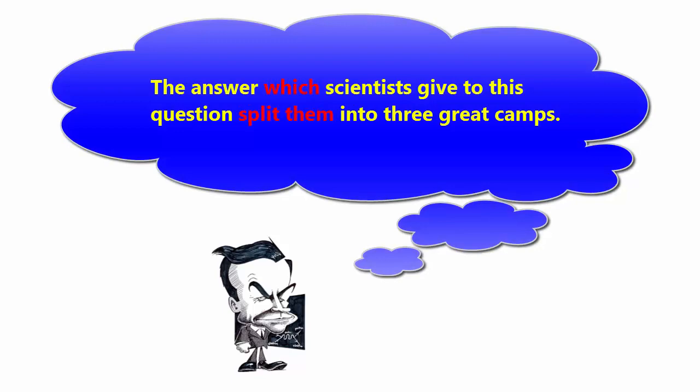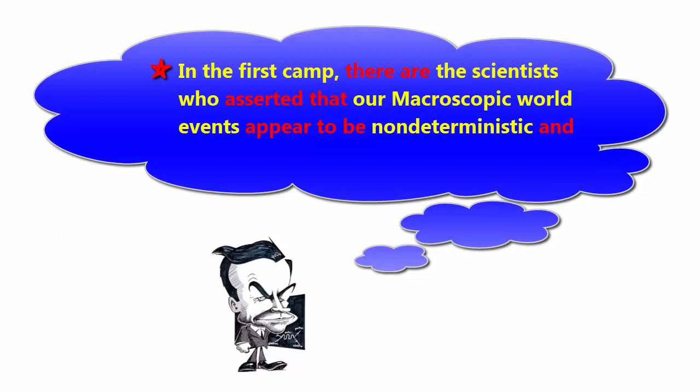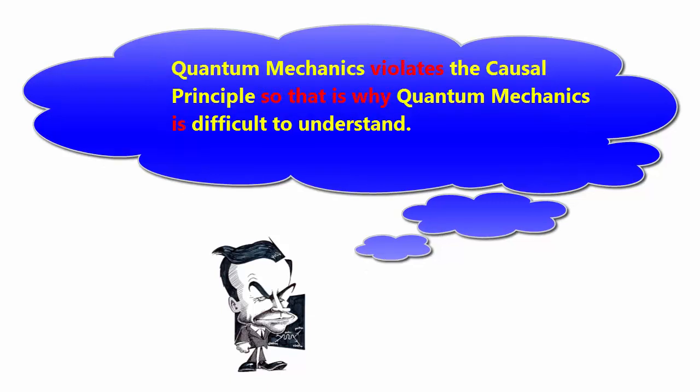In the first camp, there are the scientists who asserted that our microscopic world events appear to be non-deterministic and quantum mechanics violates the causal principle. That is why quantum mechanics is difficult to understand.